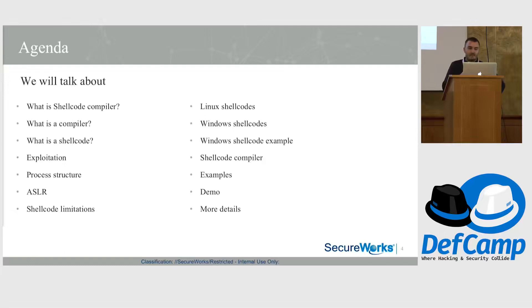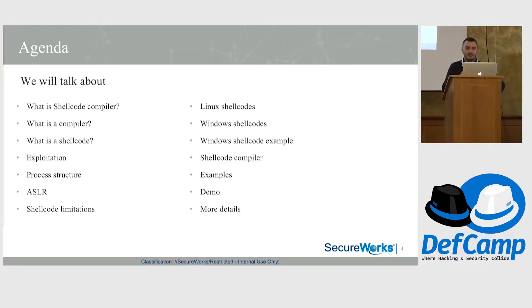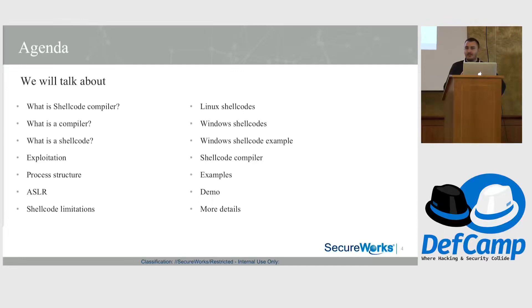This is what we will talk about today. I will introduce you to a shellcode compiler — we will see later what it does. We'll take it step by step: what is a compiler, what is a shellcode, what are the steps for exploitation, how process memory structure works in Windows, a few things about ASLR, the limitations that shellcodes have, some examples on Linux shellcodes, how Windows shellcodes work, a Windows shellcode example written step by step, how the shellcode compiler makes this easier, and a few demos.